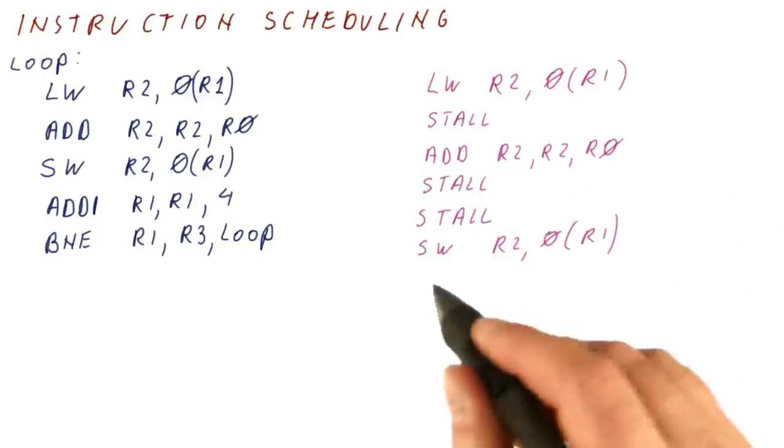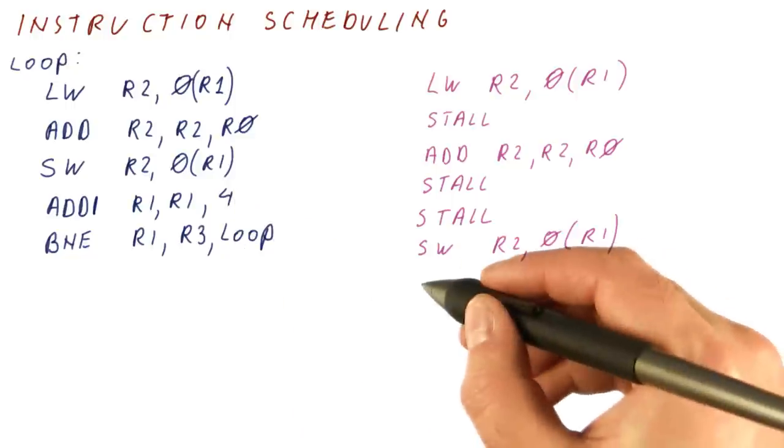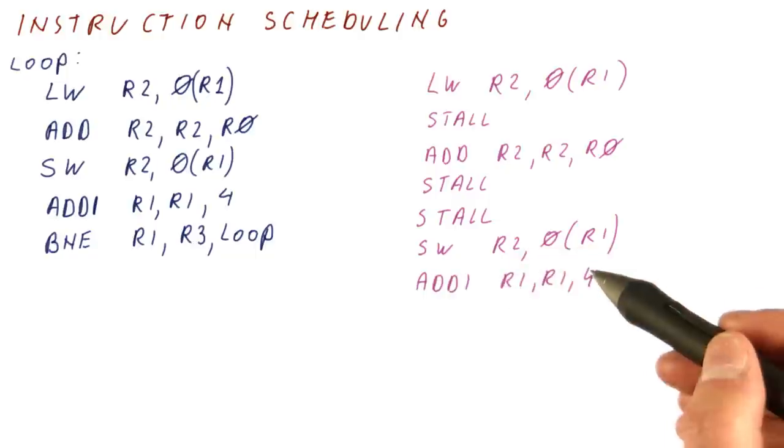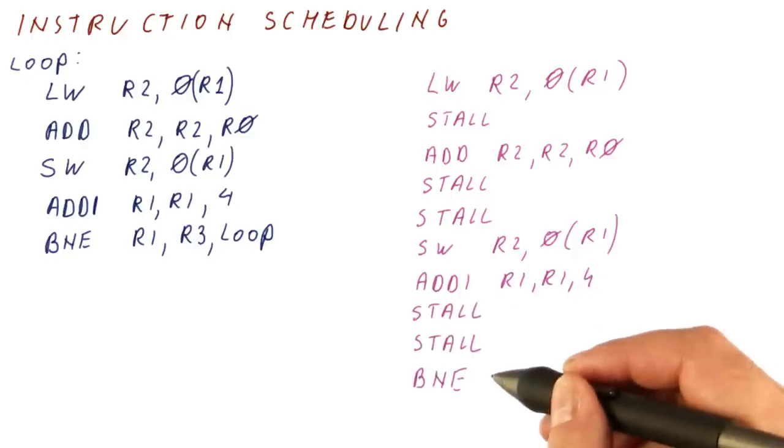Let's say now that the add takes a few cycles. Let's say three. So only here can we store. The next instruction doesn't depend on the store. So let's say we can do it in the next cycle. But then, this add again takes three cycles, let's say. So we have two stalls before we can do this branch.